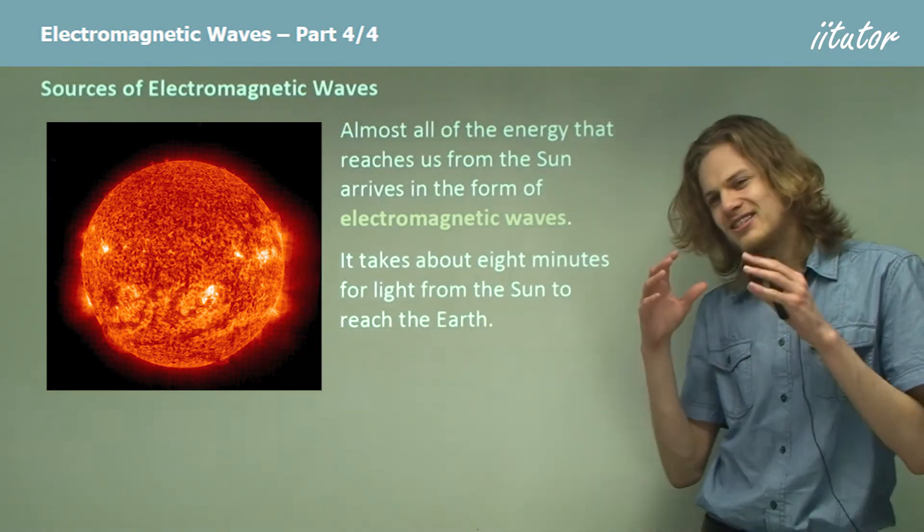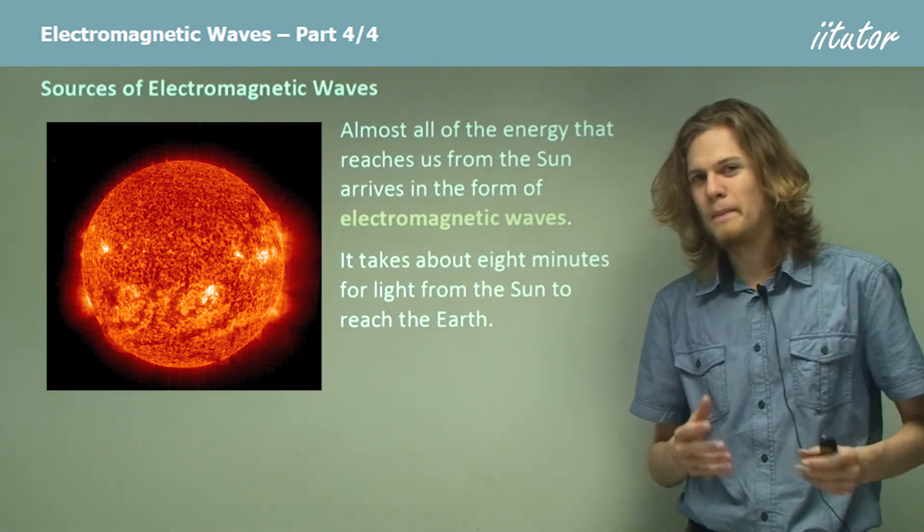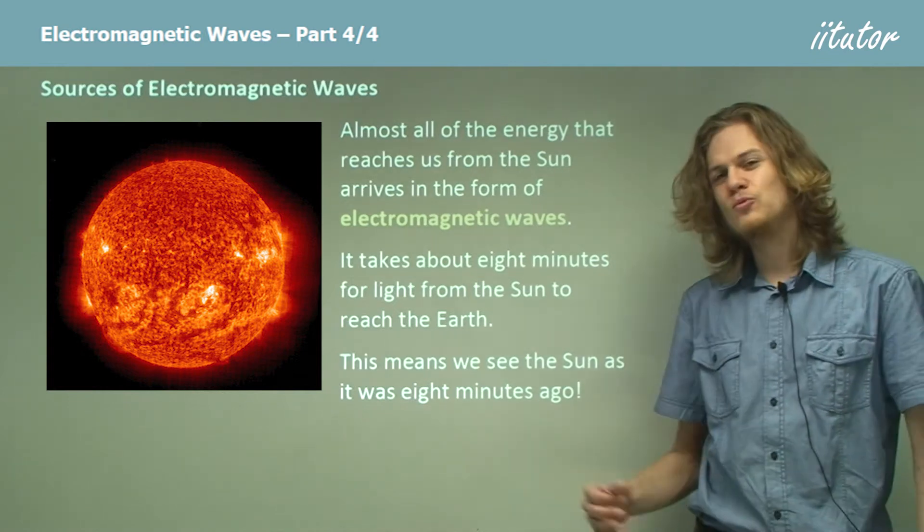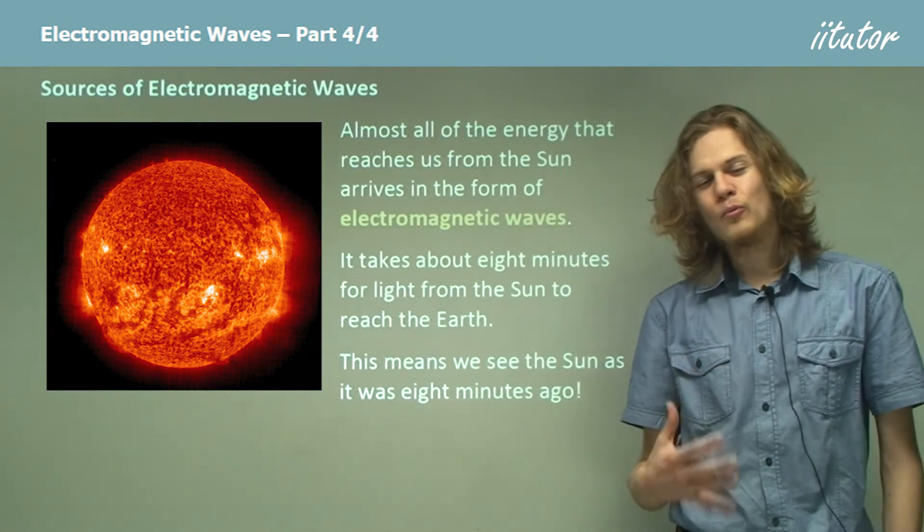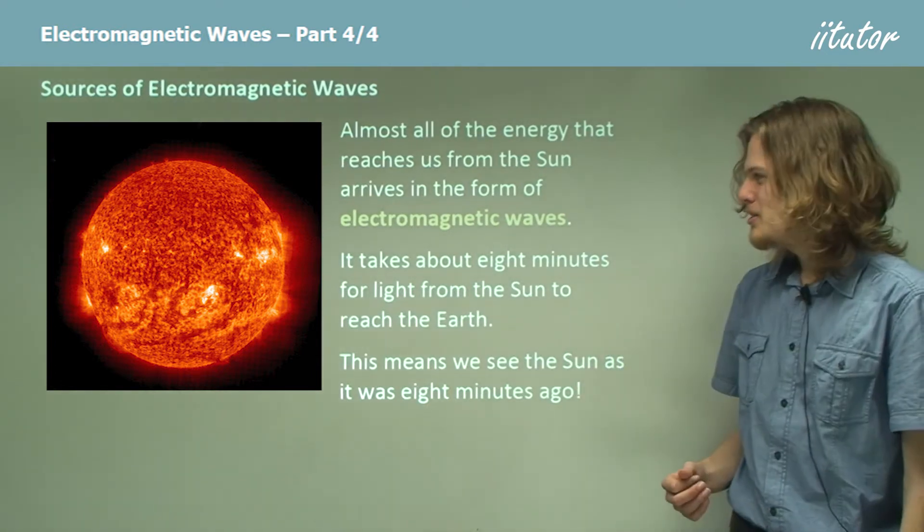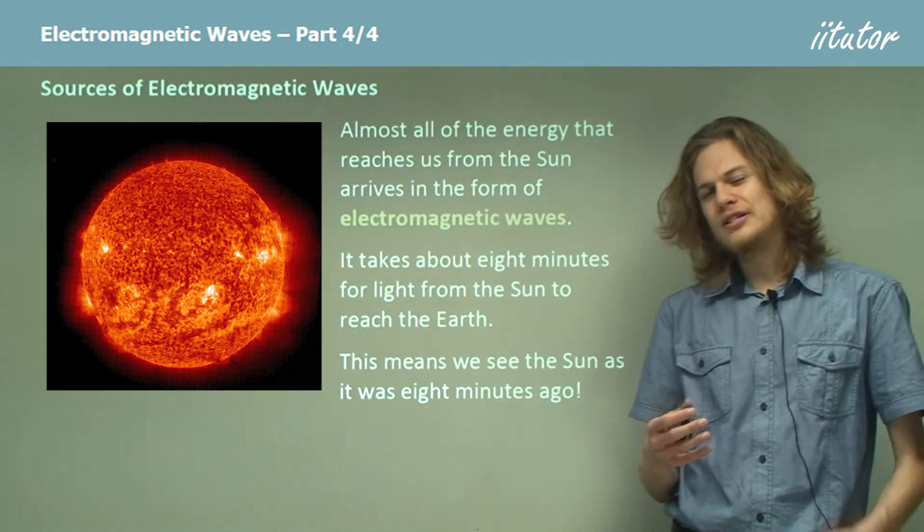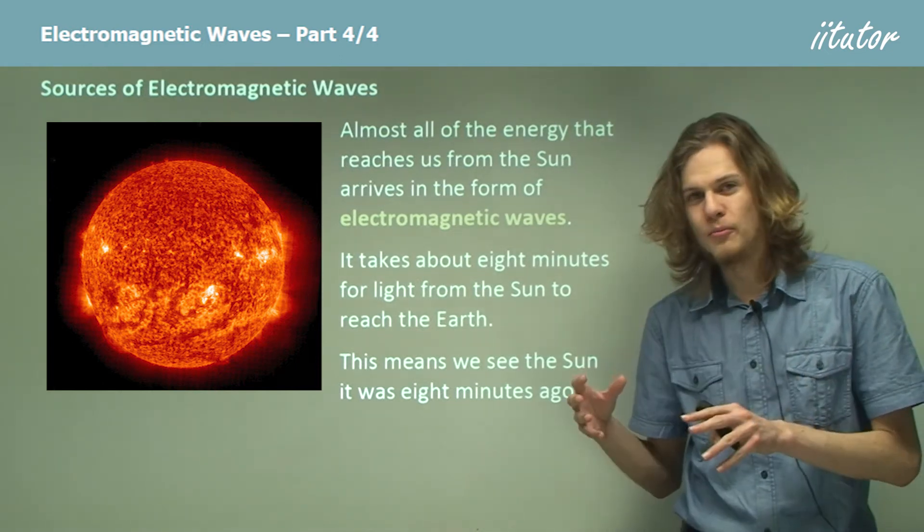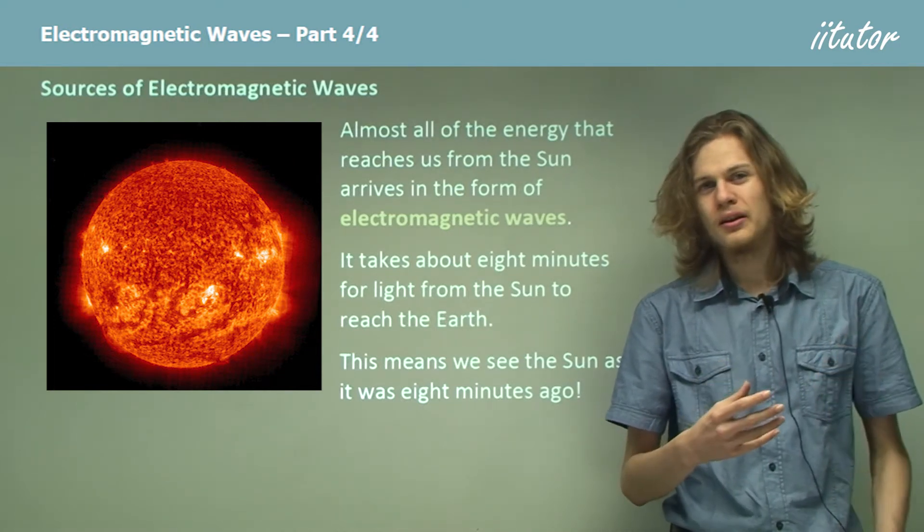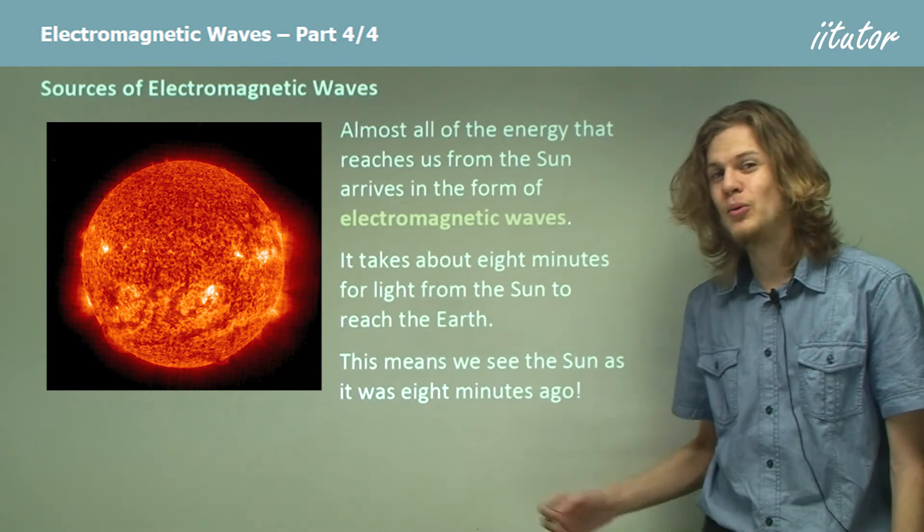In fact, we're not seeing the Sun exactly as it is at the present moment. We're seeing the Sun as it was 8 minutes ago when it first emitted the light that we're now seeing. This means that when you look at anything, you're not seeing it as it is in the present moment but as it was just an instant in the past. The further away we go, the further back into the past we're looking.